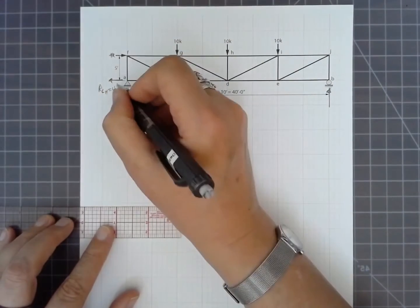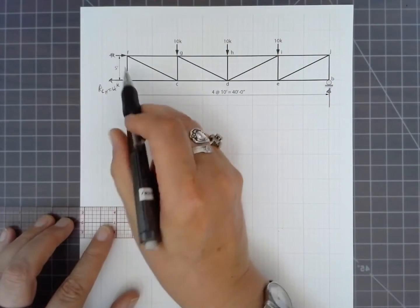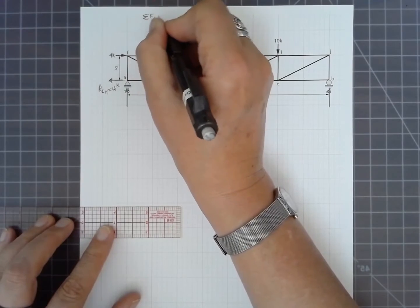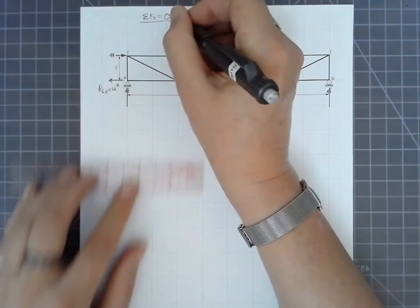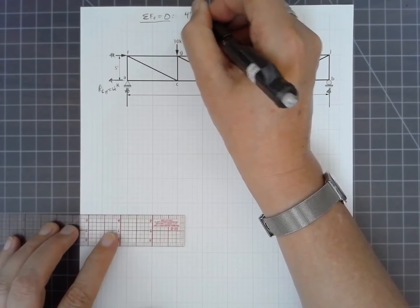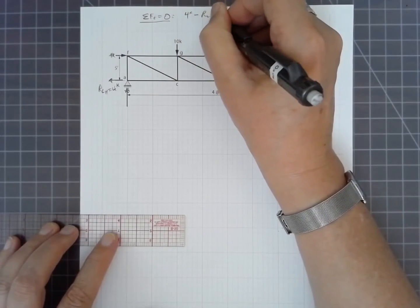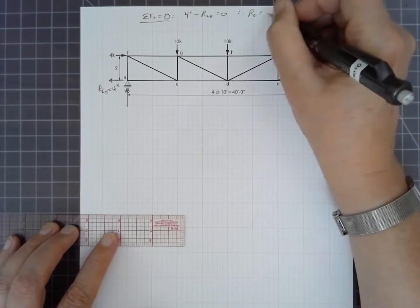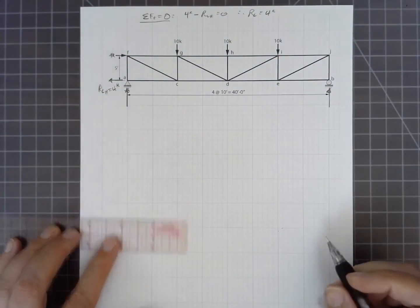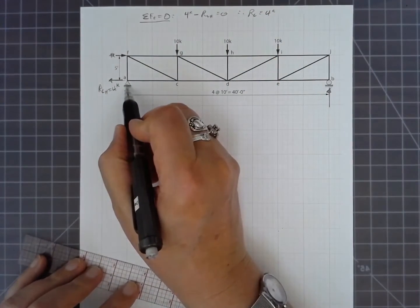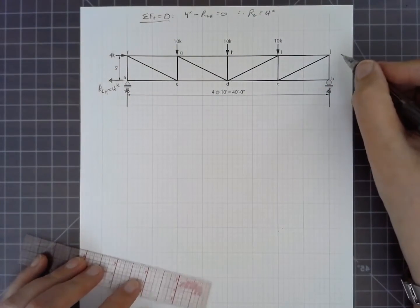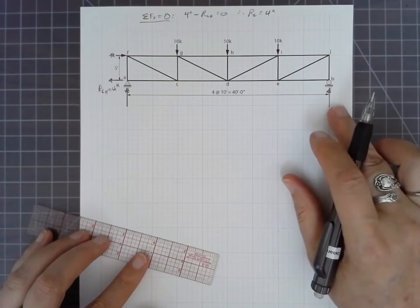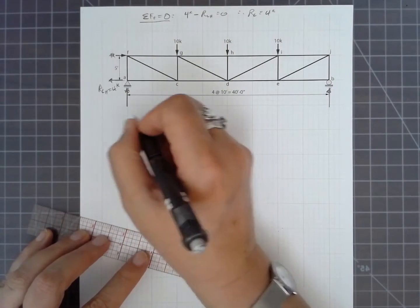So left reaction is four kips. And that's simply a trivial calculation of sum of forces horizontally equal to zero. Saying that four kips minus our left horizontal is zero. Therefore our left is four kips. That's the only place that that can go. Can't go up here. There's nothing up there. It's up in the air.